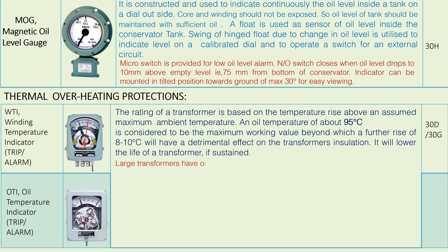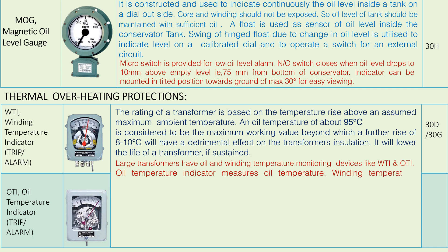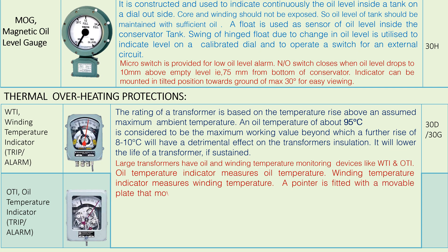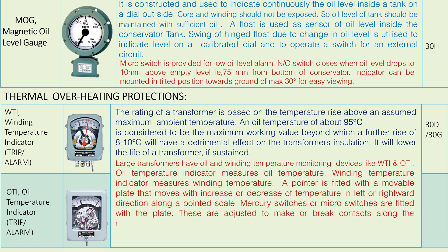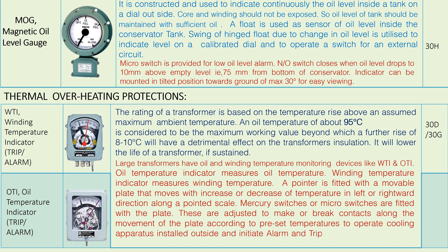Large transformers have oil and winding temperature monitoring devices like OTI and WTI. The oil temperature indicator indicates and measures oil temperature and winding temperature. A pointer is fitted with a movable plate that moves with increase or decrease of temperature in the left or right hand direction along a pointed scale. Mercury switches or micro switches are fitted with the plate and are adjusted to make or break contacts along the movement of the plate according to preset temperature, to operate cooling apparatus installed outside and to initiate alarm and trip.